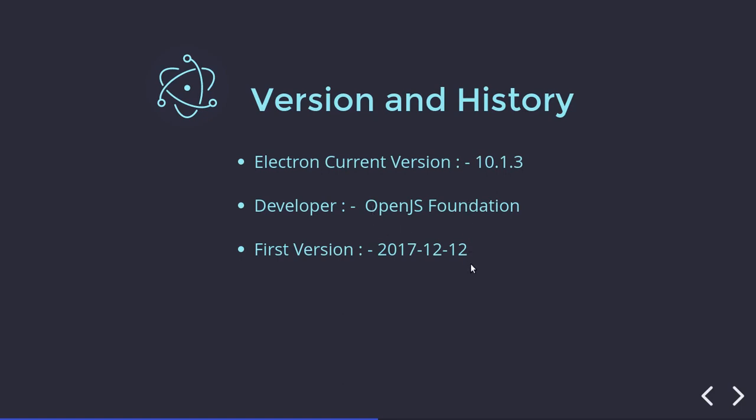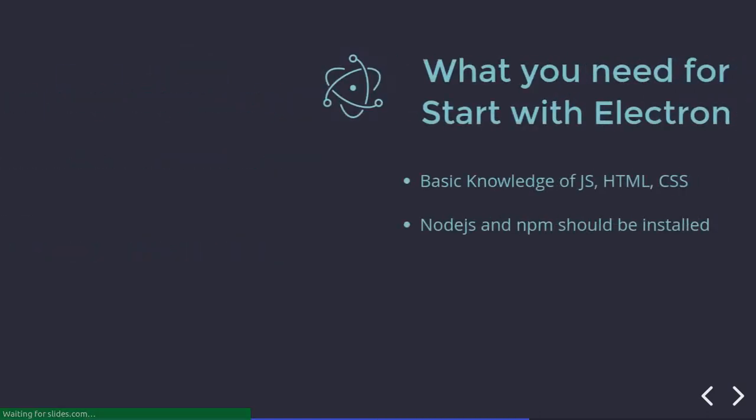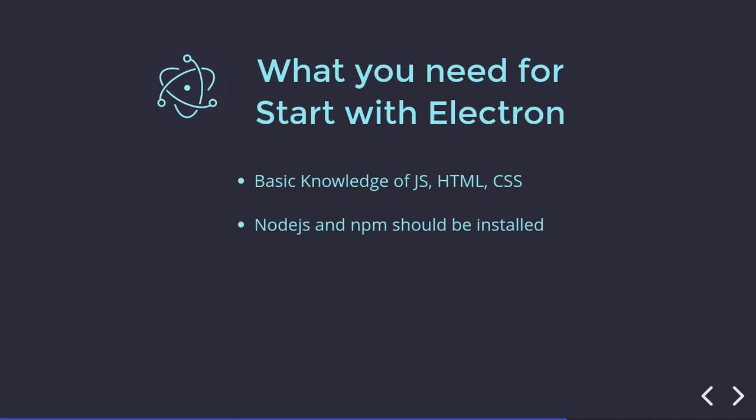The first release of ElectronJS was on 12th December 2017. That covers the basic things you need to know to get started with ElectronJS. You need basic knowledge of JavaScript, HTML and CSS, and you just need Node and NPM installed in your system so that you can quickly start with it.